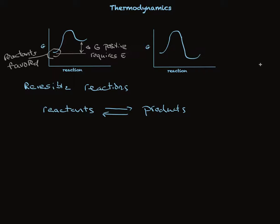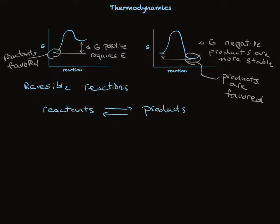On the other hand, looking at the energy diagram on the right, we see just the opposite. There's a delta G value that's negative. This is a reaction that evolves energy, goes to more stable products, and therefore the products are favored. It's as simple as that.